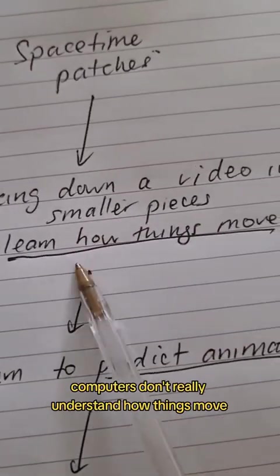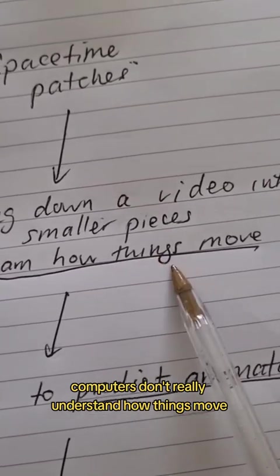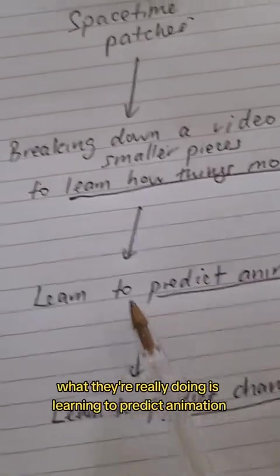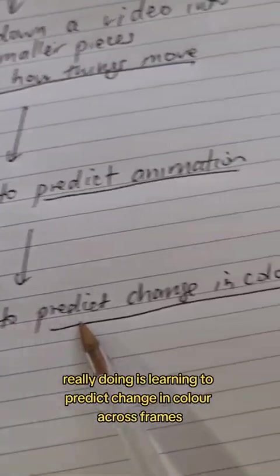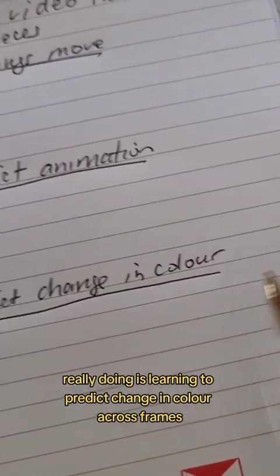But technically, computers don't really understand how things move. What they're really doing is learning to predict animation. And here, what they're really doing is learning to predict change in color across frames.